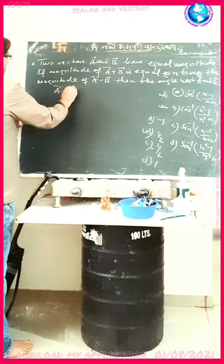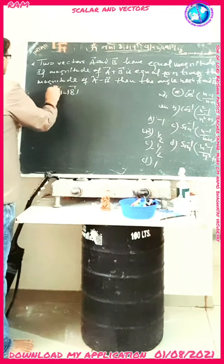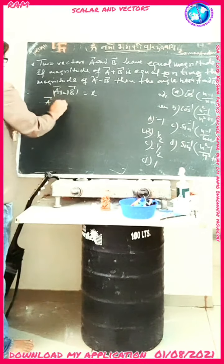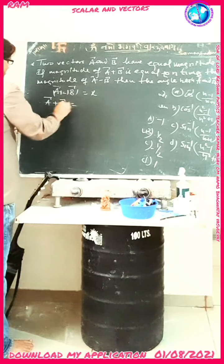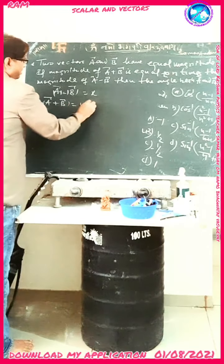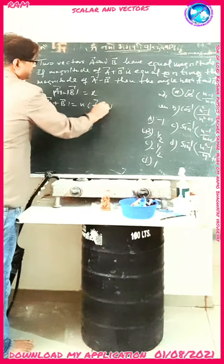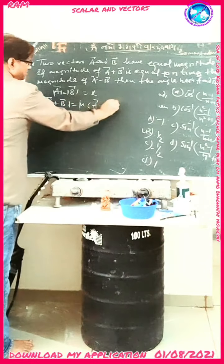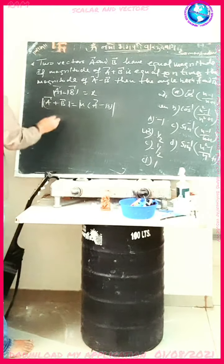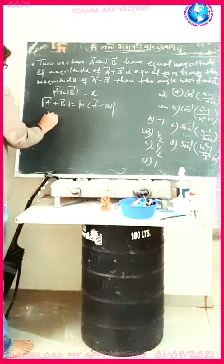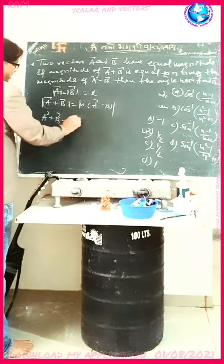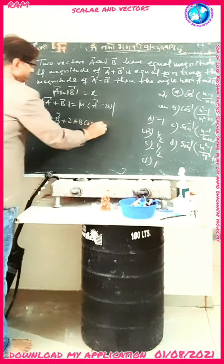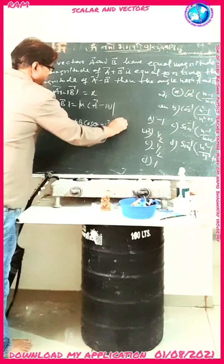Suppose vector A and B have the same magnitude, that is x. Now we have A plus B squared is equal to n squared times A minus B squared. Here, we take the magnitude of both sides. So squaring both sides, we get A squared plus B squared plus 2AB cos theta is equal to n squared times A squared plus B squared minus 2AB cos theta.